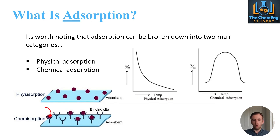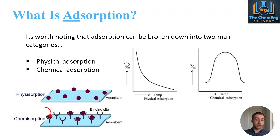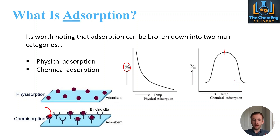If you look at the thickness with respect to temperature: in physical adsorption you have a continuous decrease in thickness as the temperature increases. Whereas for chemical adsorption, the thickness will increase to a certain maximum point and then begin to fall, because you have the adsorption and desorption process after the chemical reaction has taken place. The topic of chemisorption and physical adsorption is discussed in more detail in our thermodynamics videos and courses.